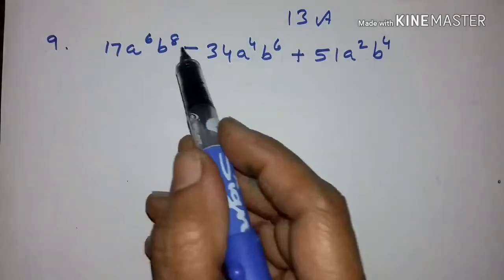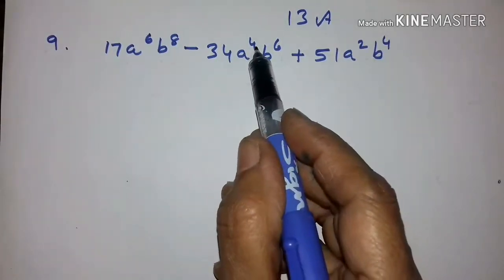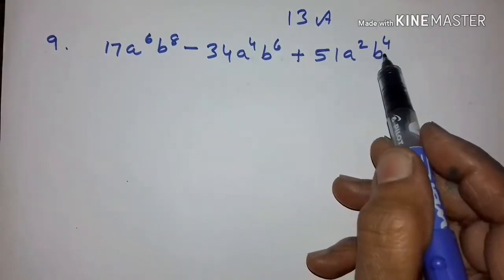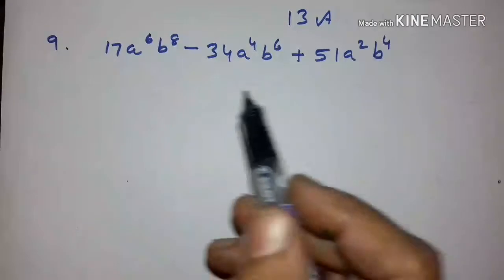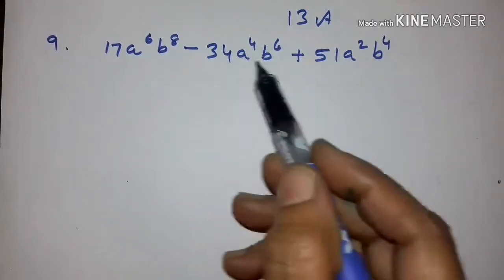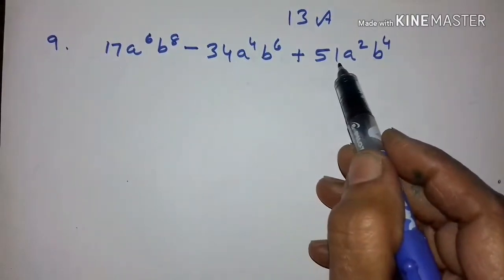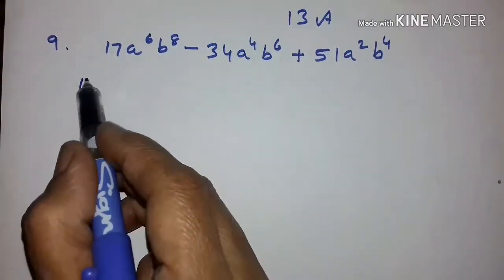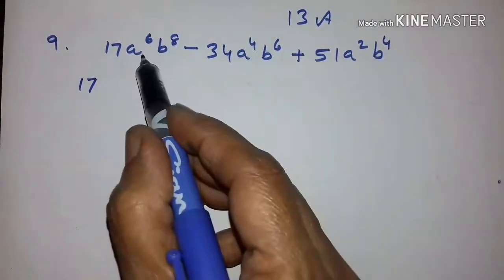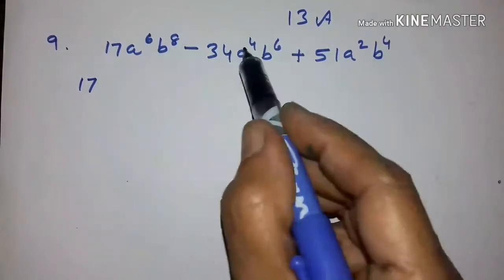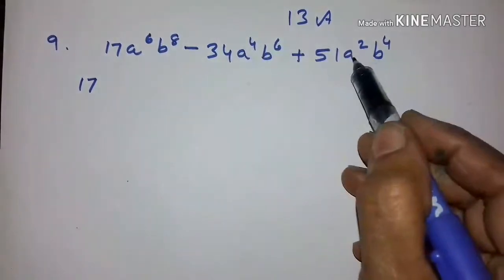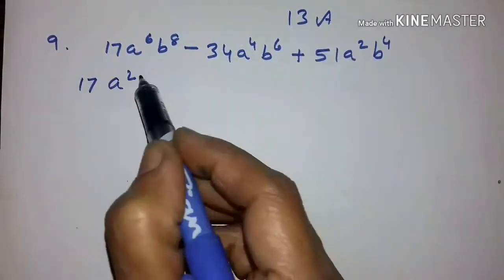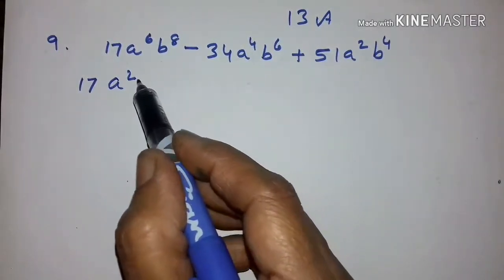The next problem is 17a raised to the power of 6, b raised to the power of 8, minus 34a raised to the power of 4, b raised to the power of 6, plus 51a squared into b raised to the power of 4. This is 17 into 2 and 17 into 3. Let us take out 17 first. Then for the powers of A: a to the 6th, a to the 4th, and a squared — the highest common factor is a squared. Let us take it out.